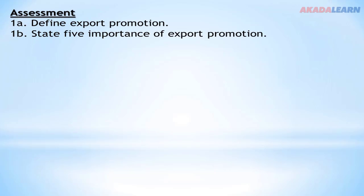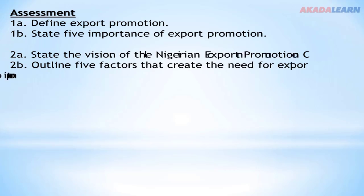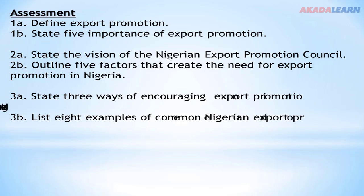Assessment: Number one, define export promotion. Number one B, state five importance of export promotion. Number two, state the vision of the Nigerian Export Promotion Council. Number two B, explain the five factors that create the need for export promotion in Nigeria. Number three A, state three ways of encouraging export promotion in Nigeria. Number three B, list eight examples of common Nigerian export produce. If you find this difficult to answer, you can go over the video again, and at the end everything will be simple for you. Have a great day.